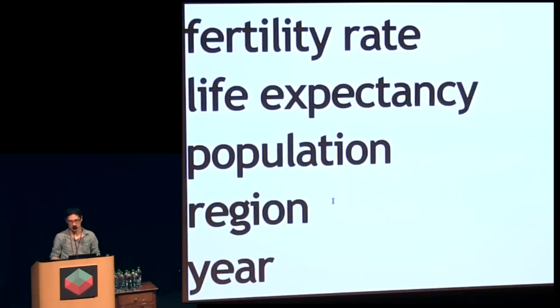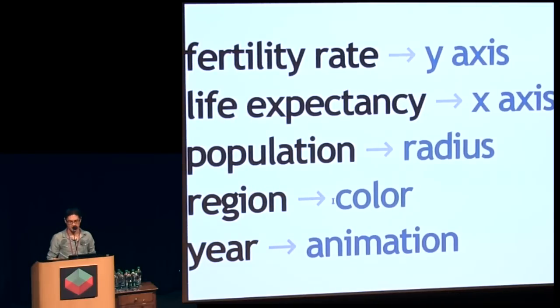Very popular visualization is Hans Rosling's bubble chart. Let me explain it in terms of its dimensions. There's five dimensions in this visualization: fertility rate, life expectancy, population, region, and year. These are mapped to different visual properties. Fertility rate goes to the y-axis, life expectancy goes to x. With just those two things you'd have a scatter plot. But then you throw in population to the radius, regions go to color, years to animation. This is what D3 was really designed to do - take objects like circles and data and map one property of the data to some visual property.